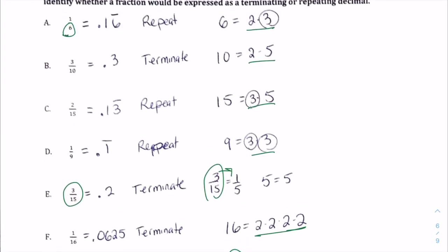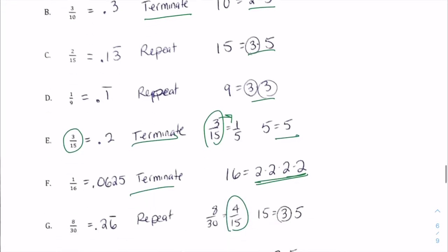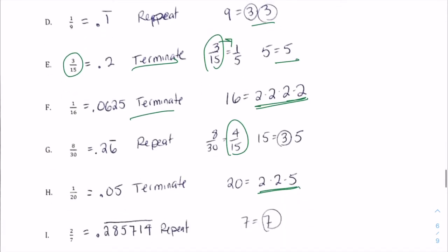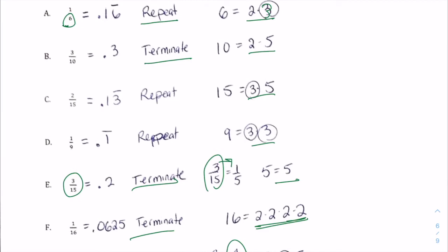So what we're looking for is a pattern in the repeating versus the terminating. Looking at the repeating, I see a three there. Looking at the terminating, I see two and five. The next terminating is just five. The next terminating is a bunch of twos. The next terminating is two times two times five. So when we have a terminating decimal, the fraction's denominator is factored as only twos and fives. What about three fifteenths? If you had factored fifteen originally you'd get three times five, but we have to do this once it's in its reduced form. Once reduced, the three canceled out with the numerator and left only a five in the denominator.